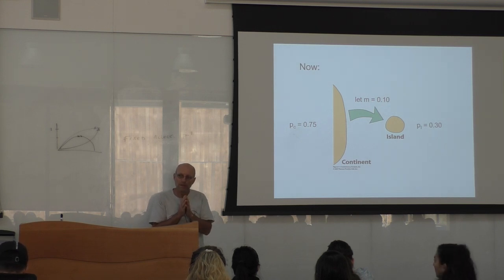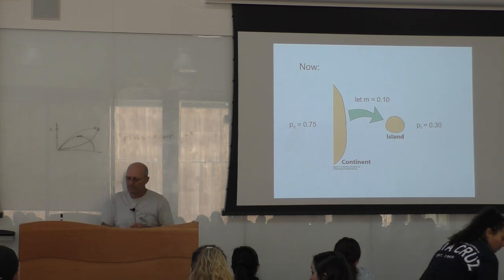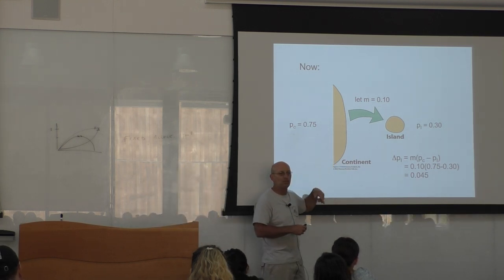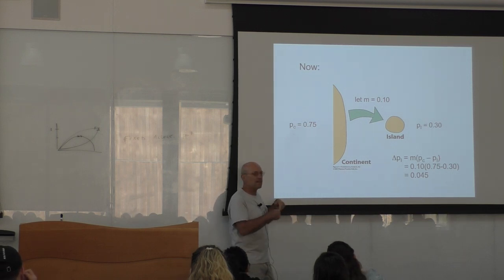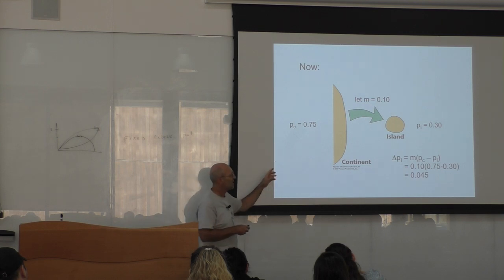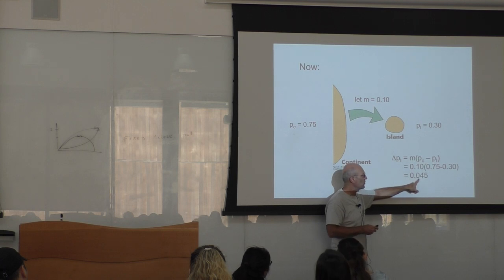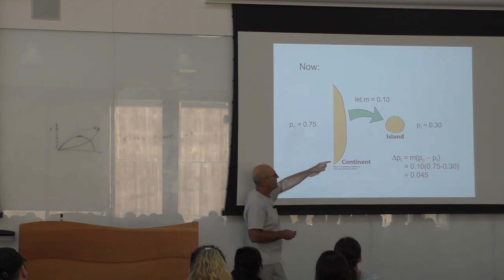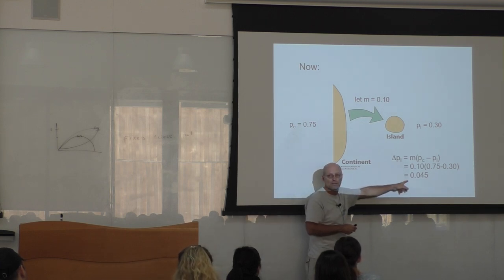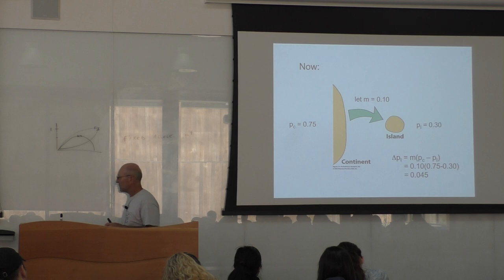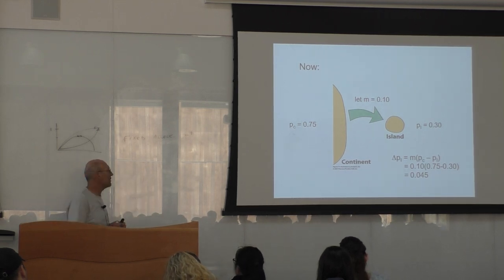The student anticipated the next slide: in the following generation, because PI has increased from 0.25 to 0.30, the difference between PI and PC is not nearly as large. So the delta P'I becomes 0.045 instead of 0.05 — this number is decreasing. Over time, eventually PI will reach 0.75 and the difference will be zero. So when you have a lot of gene flow, the two numbers eventually become the same.